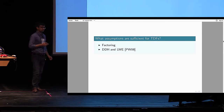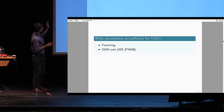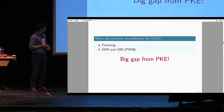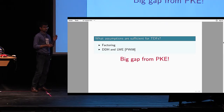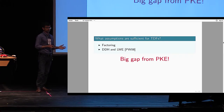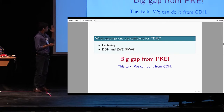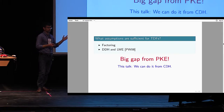So far we knew how to build trapdoor functions from a very small set of assumptions, limited to factoring, DDH, and LWE, and there is a very big gap from the set of assumptions that give us public encryption. In our work, we show how to build TDFs from the computational Diffie-Hellman assumption, and this question has been open for more than 30 years.